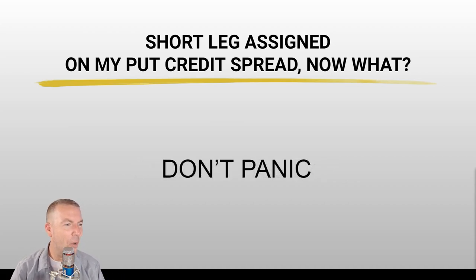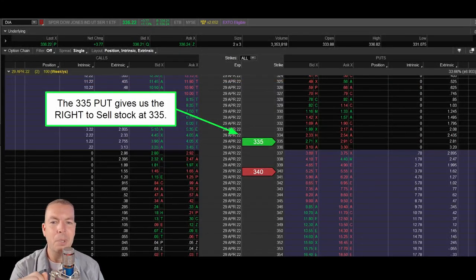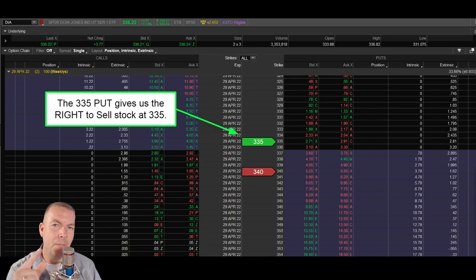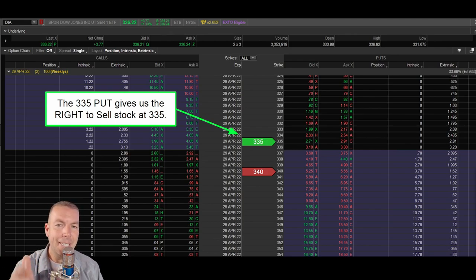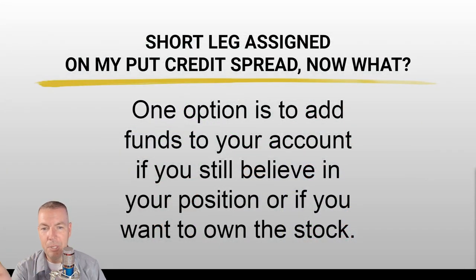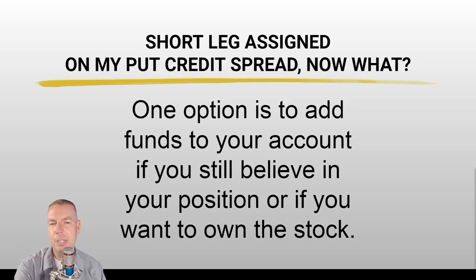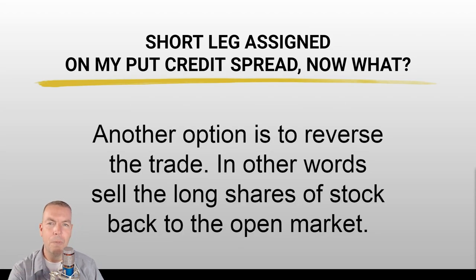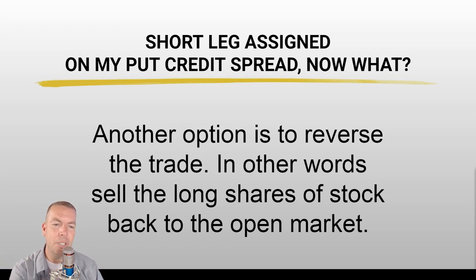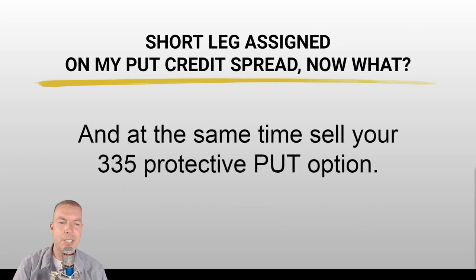Don't panic. Remember we still have that 335 put that gives us the right to sell stock at $335. So even if we were assigned at 340 we have that 335 put that allows us to sell the stock at 335, and we already received $2, so our max loss is $3. One option is to add funds to your account — if you still believe in the position or want to own the stock, just add funds. Another option is to reverse the trade: sell the long shares of stock back on the open market and at the same time sell your 335 protective put option.